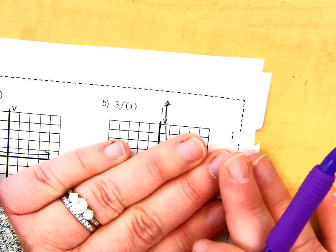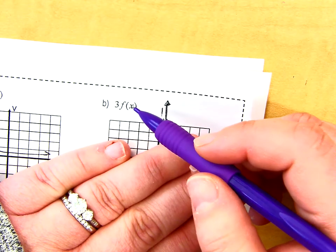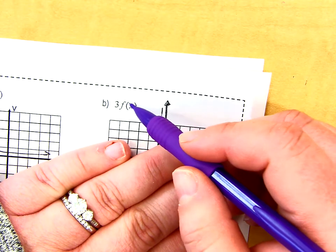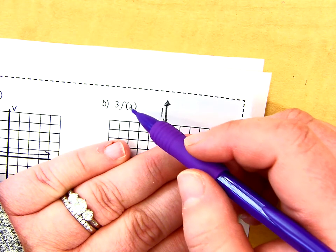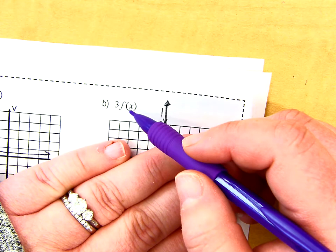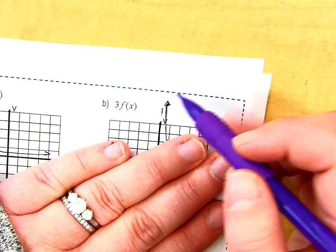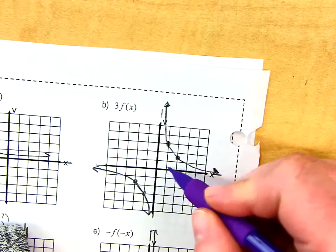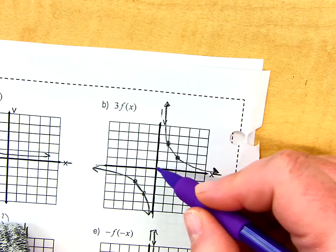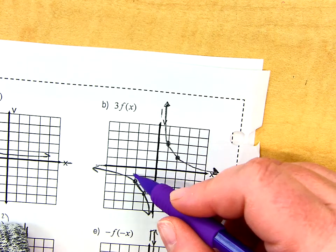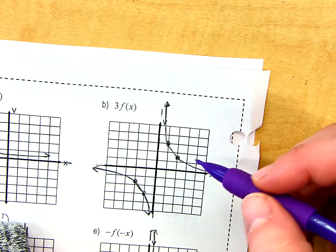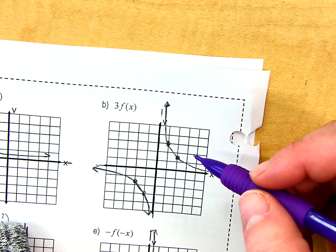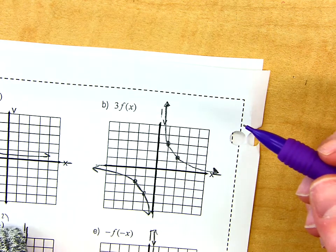What does this do? I'm going to take every y value and multiply it by 3. So I used to be at 1, 1. Now I'm going to be at 1, 3. And you can just take a couple of those key points that you had and multiply them by 3. So it should look roughly like that.